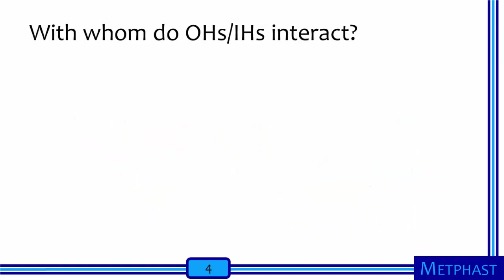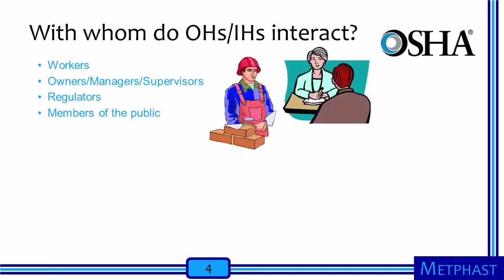With whom do occupational or industrial hygienists interact? They interact with people on the job. Most important are the workers. However, this also includes the owners, managers, and supervisors of different workplaces without whose support we can get little accomplished, regulators like those that work for the Occupational Safety and Health Administration at either the federal or state level, and members of the public who may be affected by what goes on at the worksite.